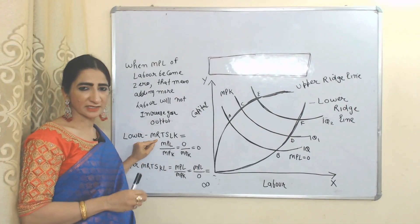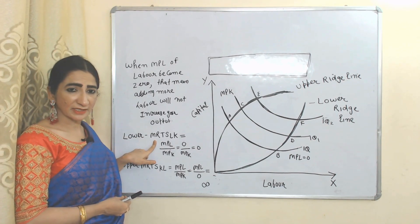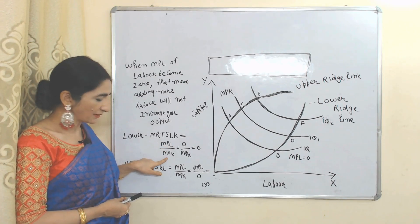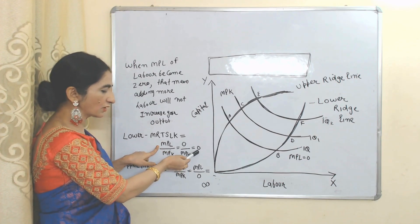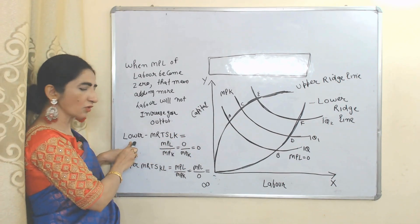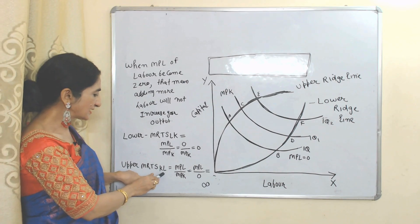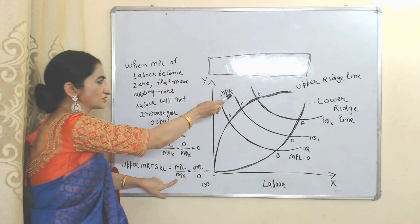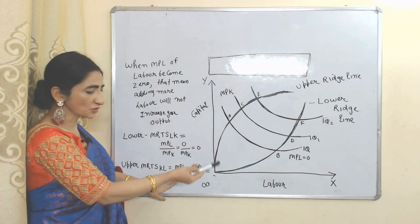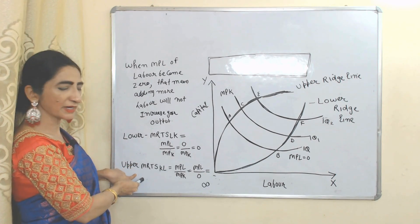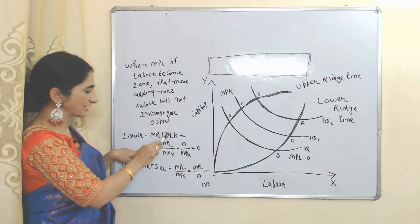Now we will see the marginal rate of technical substitution (MRTS) of labor for capital. MRTS is equal to MPL over MPK. At the lower ridgeline, MPL is zero, so zero over MPK equals zero — therefore MRTS is equal to zero at the lower ridgeline. At the upper ridgeline, MPK is zero, so MPL over zero becomes infinity — therefore MRTS is infinity at the upper ridgeline.